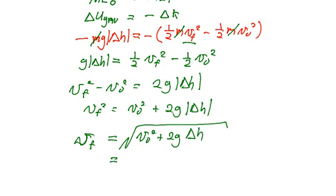Alright, so let's get our calculator out and figure out what these numbers are. Delta h is 8.2 meters, multiply that by g, 9.8, multiply that by 2, so that's 160.7, and I add that to 9.5 squared. That gives me around 251, and I take the square root of that and I get 15.8,